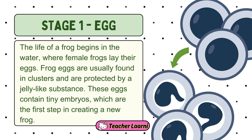Stage 1 – The Egg. The life of a frog begins in the water, where female frogs lay their eggs. Frog eggs are usually found in clusters and are protected by a jelly-like substance. These eggs contain tiny embryos, which are the first step in creating a new frog.